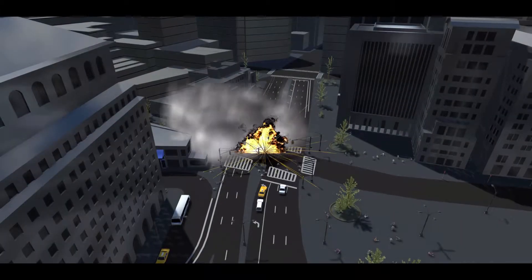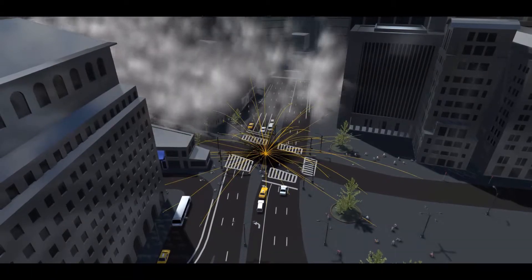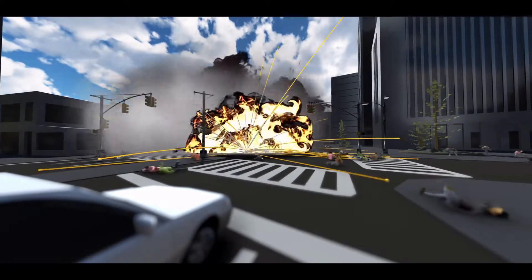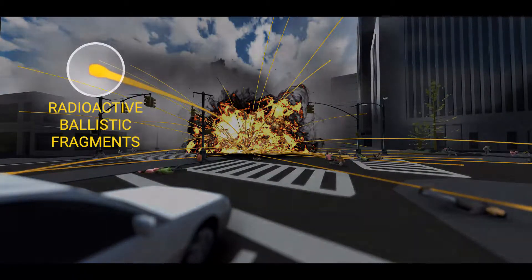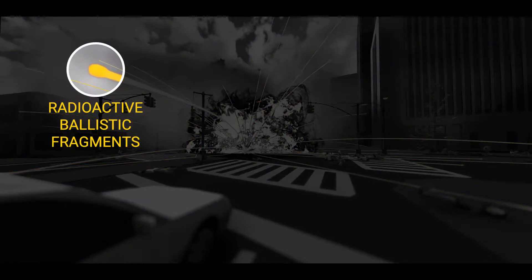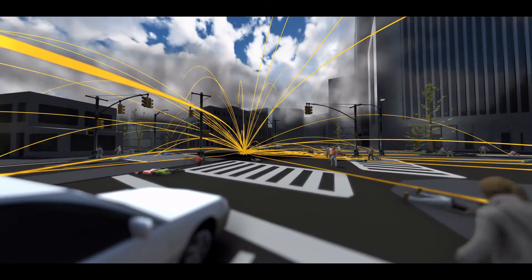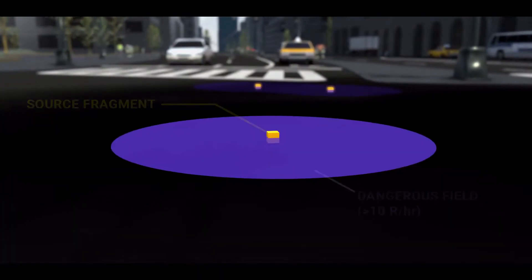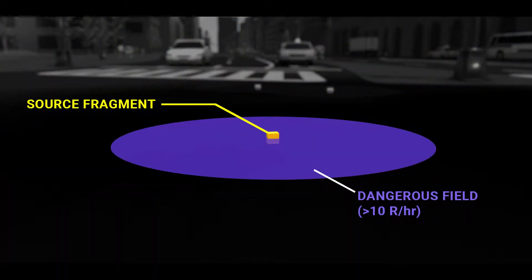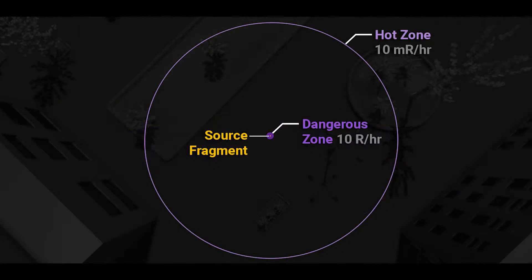The first 100 minutes. The detonation of a radiological dispersal device may produce radioactive ballistic fragments that can give off radiation. In this example, the dangerous radiation zone around the fragment is shown in dark purple. The hot zone is shown in light purple.